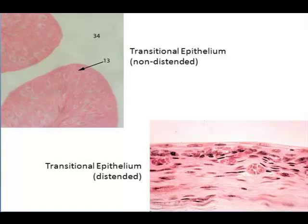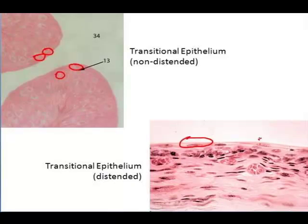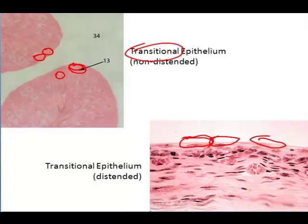Finally, we have a type of epithelium that actually changes shape. Transitional epithelium is found in the umbilical cord and the urinary system. What happens is that when the tissue is not stretched — like the urinary bladder, which fills with urine — you get very cuboidal-looking cells that are fairly round and square. But when that tissue becomes filled and stretches, those cuboidal shapes start to look squamous. They flatten out and stretch to give the organ more flexibility. This is called transitional epithelium because it transitions — it starts off looking cuboidal and finishes looking squamous.